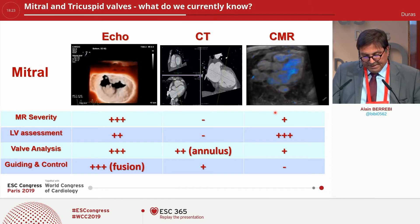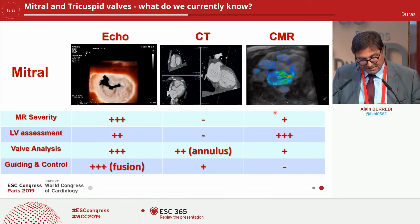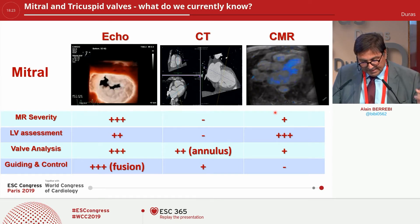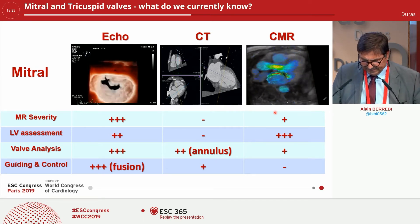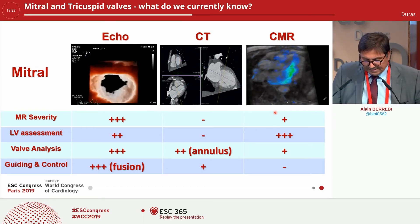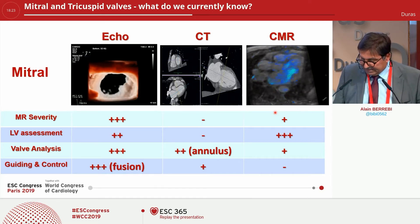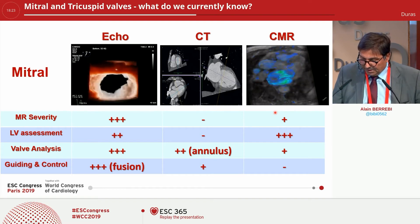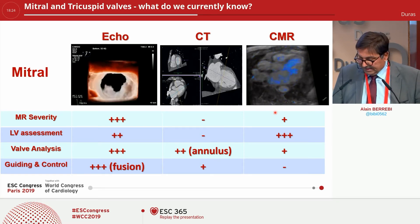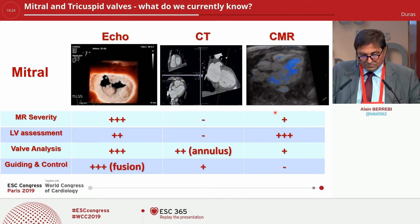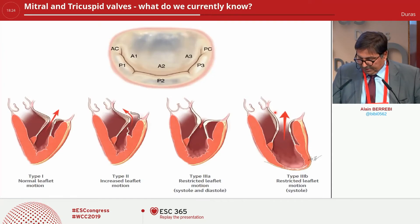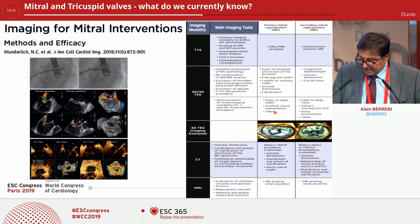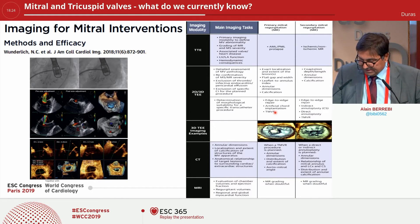In summary, for mitral regurgitation, ECHO is particularly important for MR severity, LV assessment, valve analysis, guiding and control — particularly with fusion. For CT scan, it is more important for valve analysis and particularly for the annulus. And CMR is important for LV assessment. I recommend this very important and very nice paper from Nina Wunderlich, which summarizes all these fields.